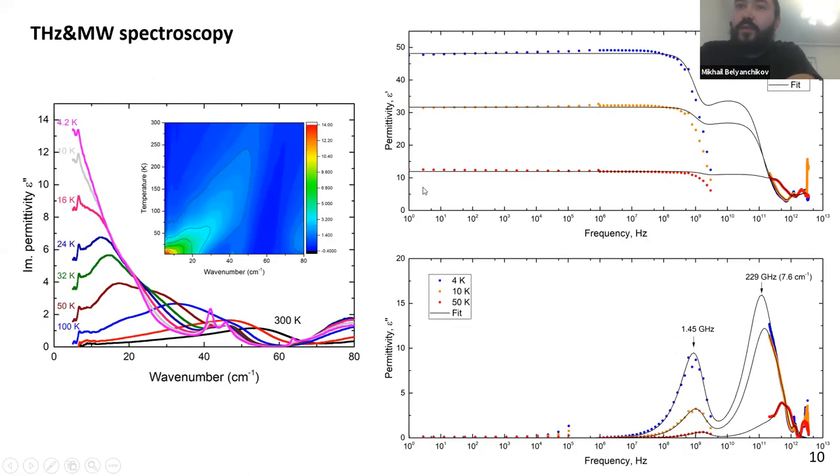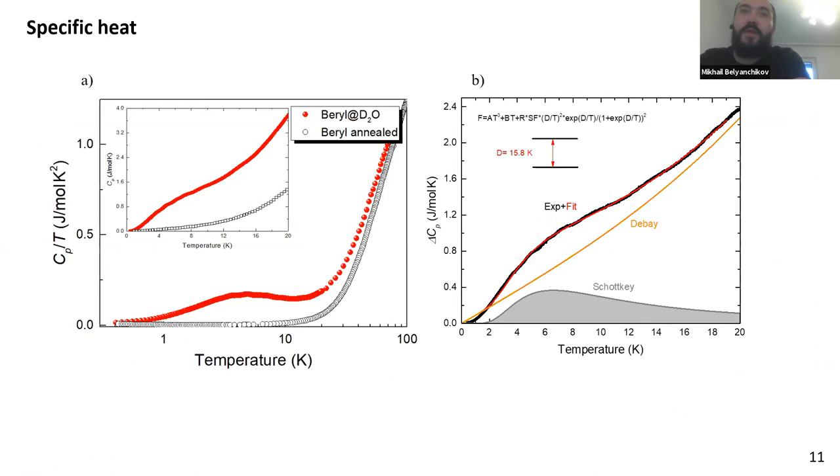To better understand what happened in our system, we also did the terahertz and microwave measurements at different temperatures. And combining all the data together, we can plot the extremely wideband spectra of permittivity. Here you can see that at temperatures above the phase transition, above 2 Kelvin, 4 Kelvin for example, the main features here are two absorption peaks, which along with the specific heat data which we also measured.